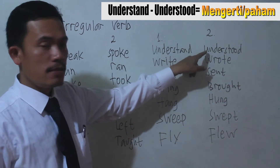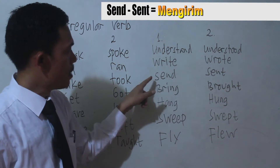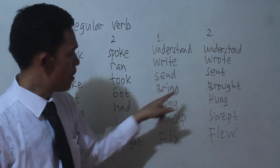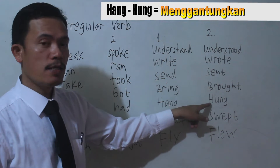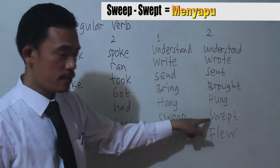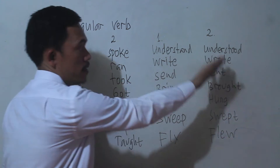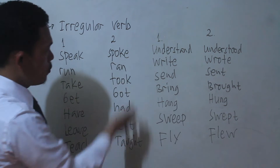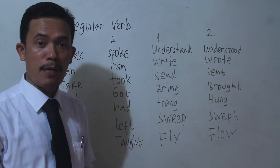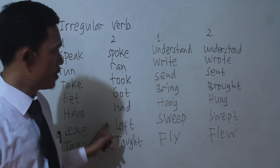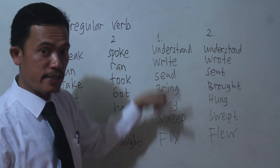'Understand' becomes 'understood', 'write' becomes 'wrote', 'send' becomes 'sent', 'bring' becomes 'brought', 'hang' becomes 'hung', 'sweep' becomes 'swept', 'fly' becomes 'flew'. These verb 2 forms are used in simple past tense. We don't use verb 1 here because verb 1 is used only in simple present tense.